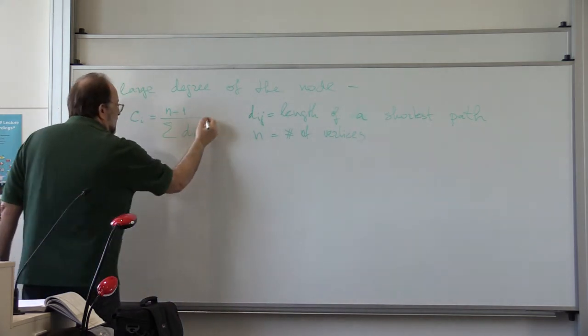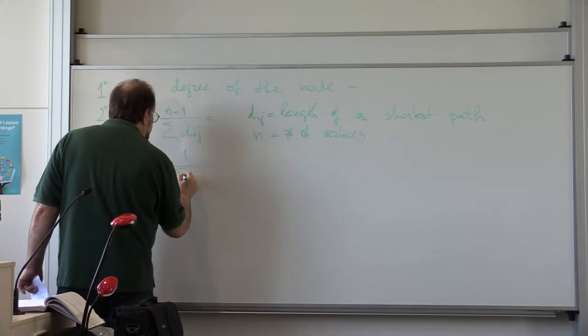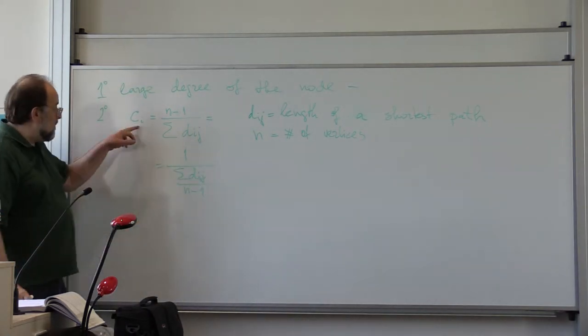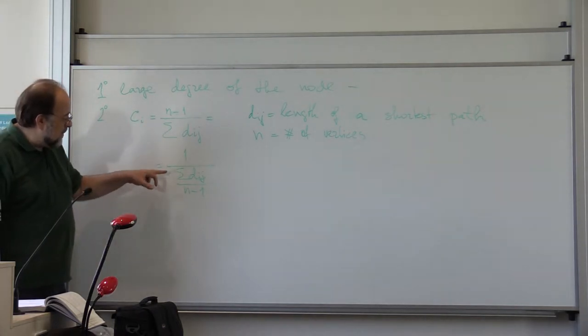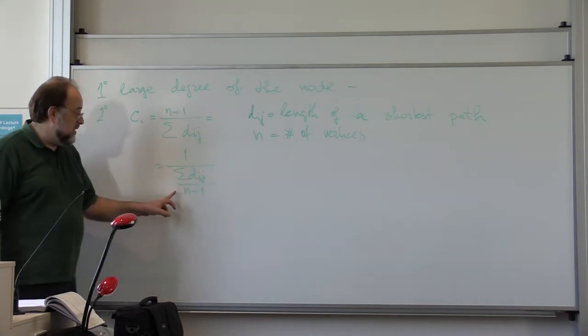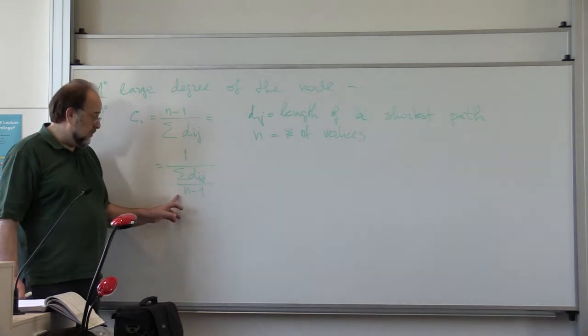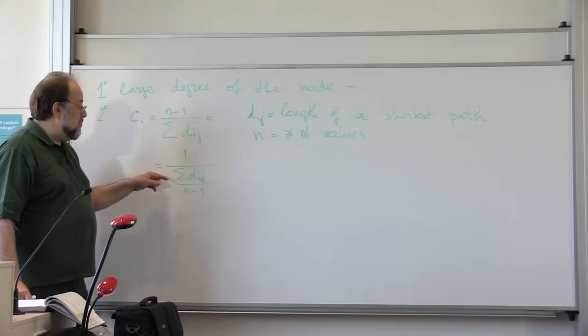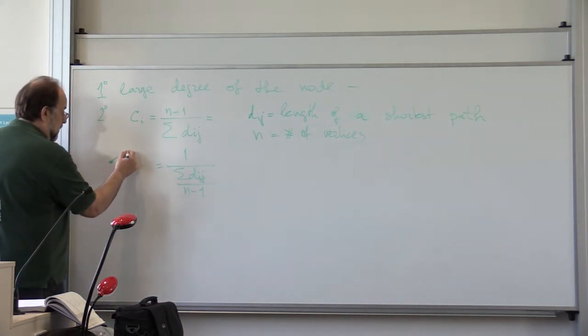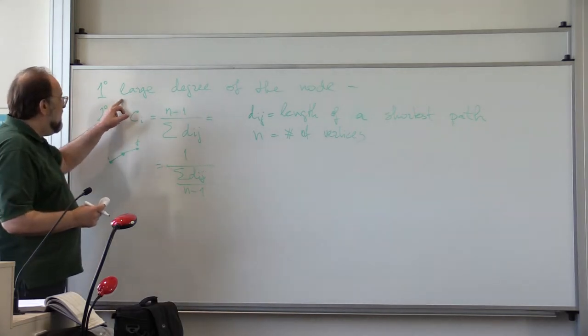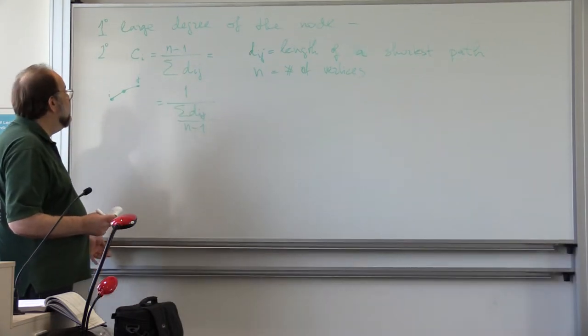So notice what is this? This is actually a reciprocal of the mean of the length of the shortest path. So centrality of a node i will be then reciprocal of the mean of the length of the shortest path from i to any other vertex j divided by how many other vertices there are, namely n minus 1. So this will be large if this is small, which means that you can kind of hop from i to any other vertex j with a reasonably small number of intermediate nodes. And of course, this is much better measurement than just the vertex.